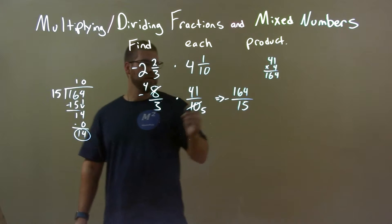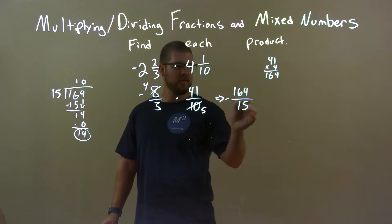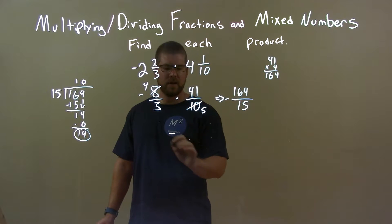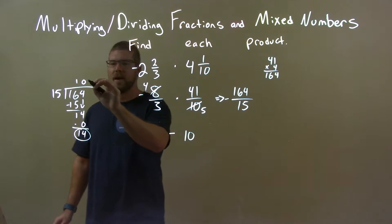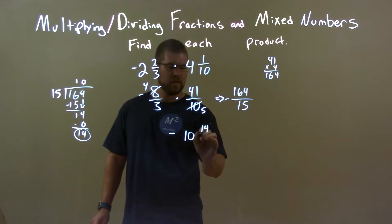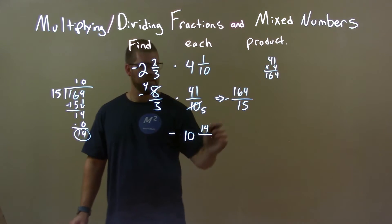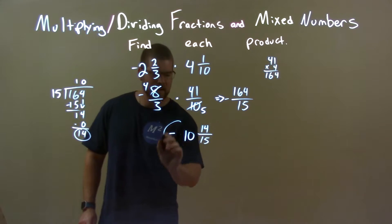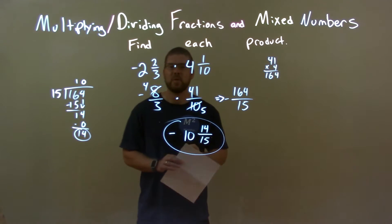So our answer here. This fraction, the negative's out front. 10 is what we have here. But then our remainder, which is 14 over 15, the divisor. And so we have our final answer of negative 10 and 14 over 15.